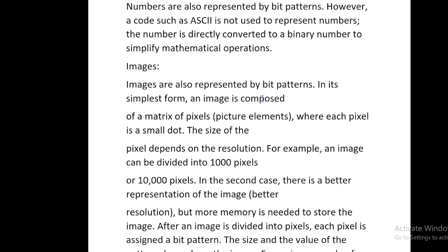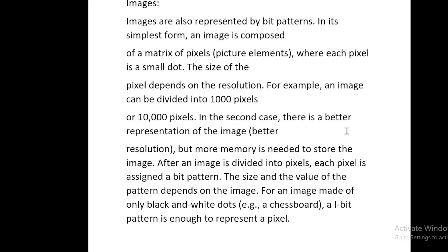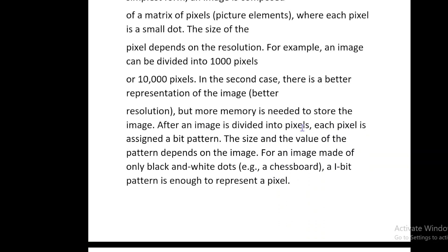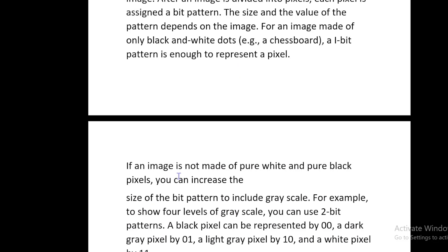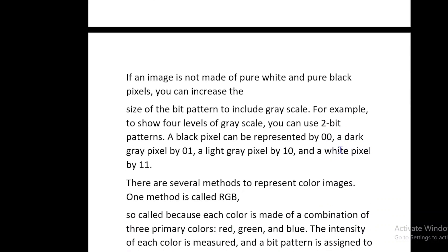Images are also represented by bit patterns. In its simplest form, an image is composed of a matrix of pixels — picture elements — where each pixel is a small dot. The size of the pixel depends on the resolution; for example, an image can be divided into 1,000 pixels or 10,000 pixels. In the second case, there is better representation and resolution, but more memory is needed. Each pixel is assigned a bit pattern. For a black-and-white image like a chessboard, a 1-bit pattern is enough. For grayscale, you can use two-bit patterns: black as 00, dark gray as 01, light gray as 10, and white as 11.